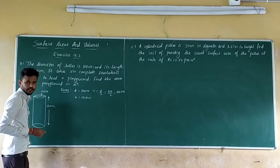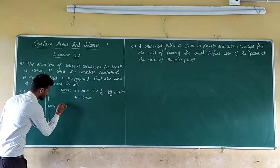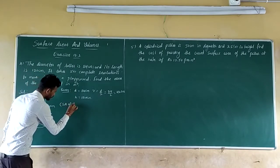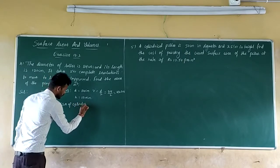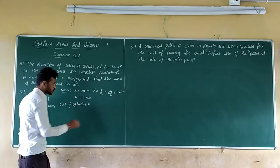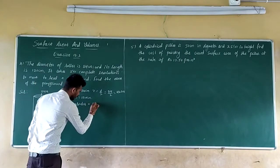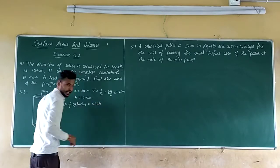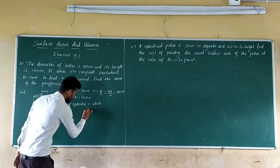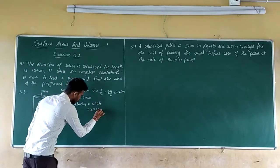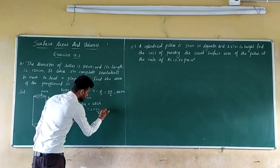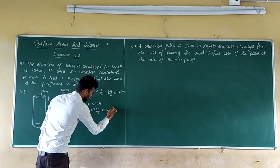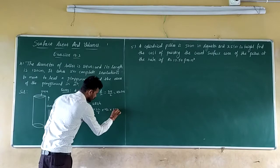Find the CSA of the cylinder. CSA of cylinder equals 2πrh. So 2 into 22/7 into radius 42 into height 120.